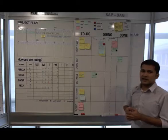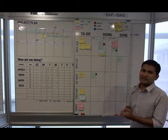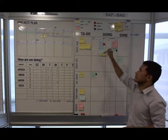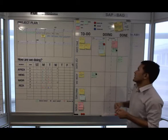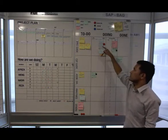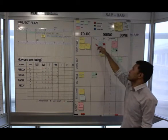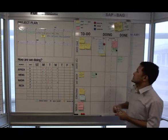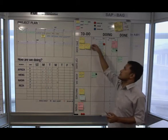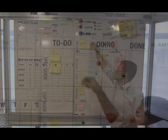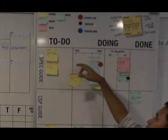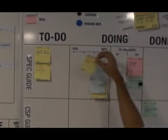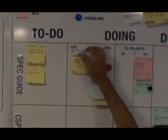Once the team member starts to work on that particular project, they're going to move the sticky notes from the to-do column to the doing column, and it will be sorted according to the progress from 10% to 90%. For example, when I started to work on this project, I move it from the to-do column to the doing column — let's say it's already 20% complete, so I put it there.